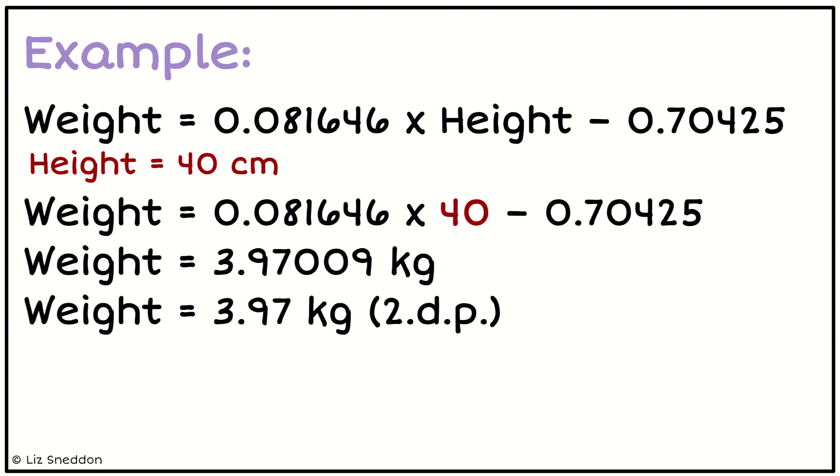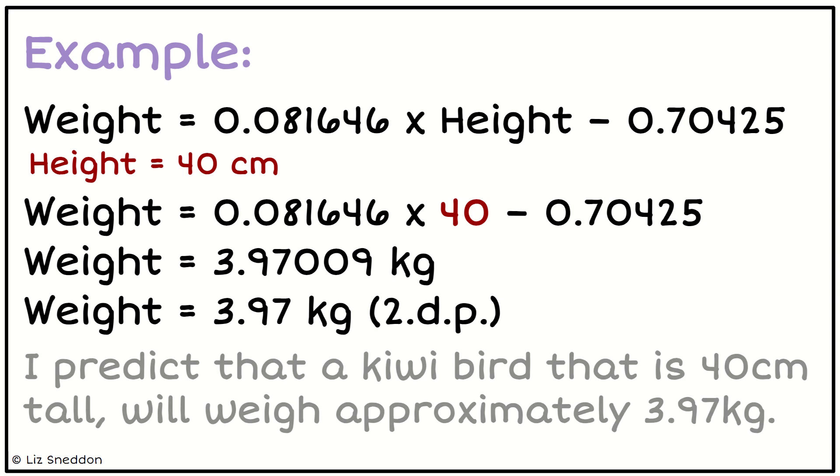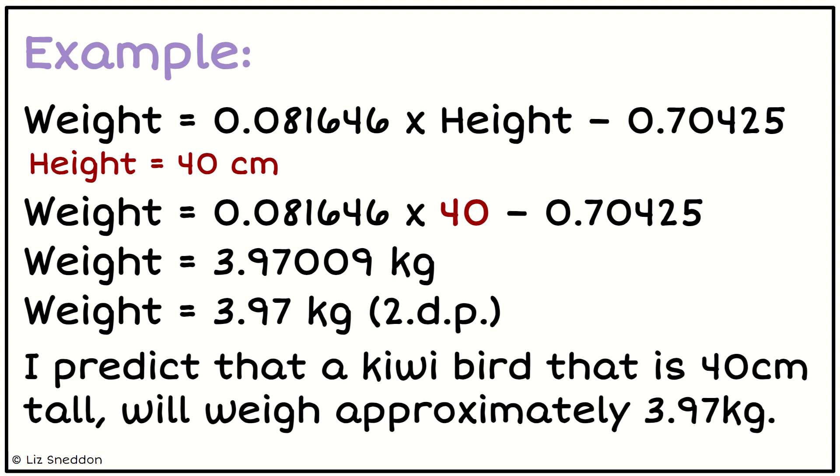So I'm going to just choose to do two decimal places because for weight that feels like a good limit. And now I need to interpret that. So I predict that a kiwi bird that is 40 centimeters tall will weigh approximately 3.97 kg.